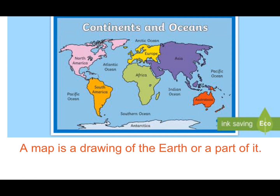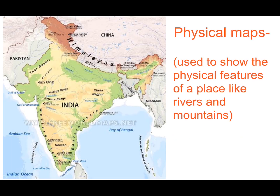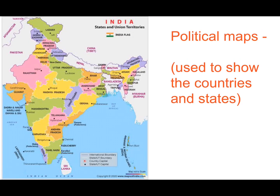Sometimes we use very small and sometimes we use large maps. There are three types of maps: physical maps, political maps, and climatic maps. Physical maps show the physical features of a place such as mountains, plateaus, plains and rivers. Political maps show the countries, states and their capitals.